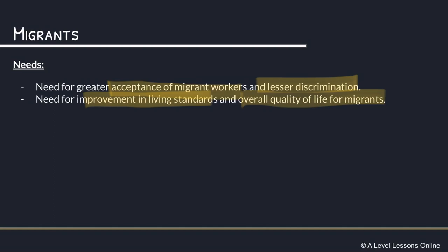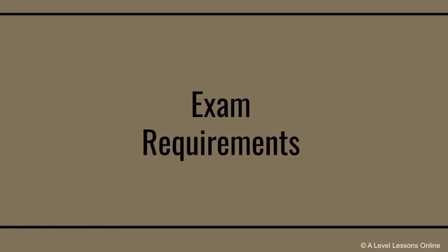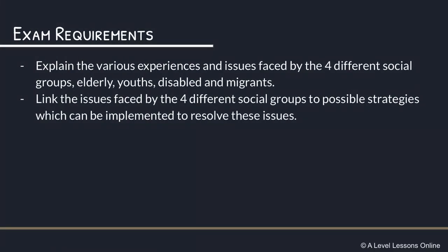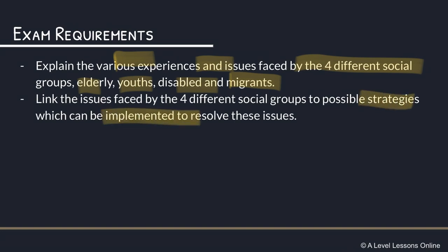Those are the four main social groups. For exam requirements, you need to be able to explain the experiences and issues faced by the elderly, youths, disabled, and migrants, and link those issues and needs to the possible strategies that can be implemented to resolve them. The strategies will be covered in the next video on Part 9b. Make sure you understand each group's experiences, needs, and issues clearly so that in an essay you can articulate what issues each group faces and what strategies are needed.